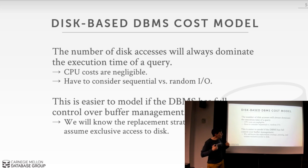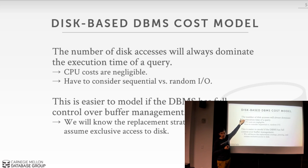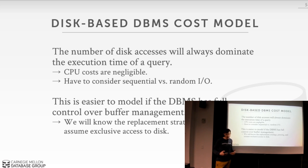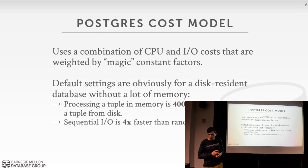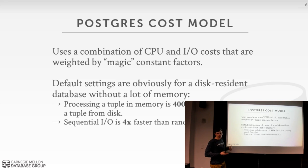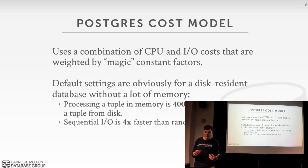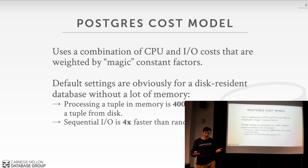For distributed databases like MemSQL, you can essentially replace disk IO with network IO — it's just as bad. Distributed systems need to know how data is placed across multiple machines and include that in cost estimates. Now, Postgres is a great example of a textbook disk-based database implementation — nearly everything described in database textbooks is how Postgres actually implements things.